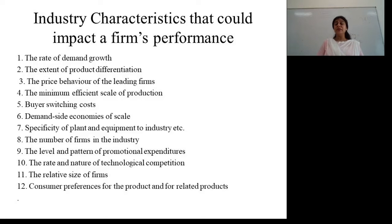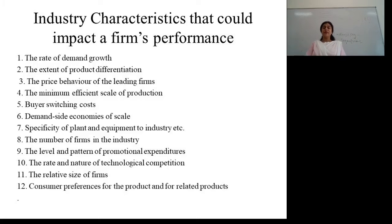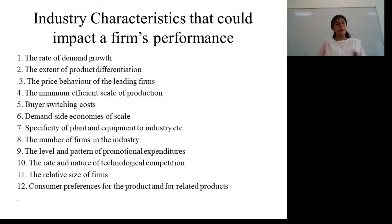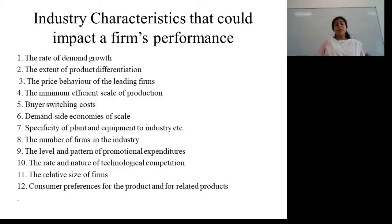Third, the price behavior of leading firms — if you have quoted a price for a particular product, what kind of competitive price are other companies within the same industry quoting? You have to keep pace; you should not be too high and not even at a loss; you have to sustain that competitive market. Fourth, the minimum efficient scale of production — production should go on, but that should not mean excess such that people are stocking and the product is getting outdated.